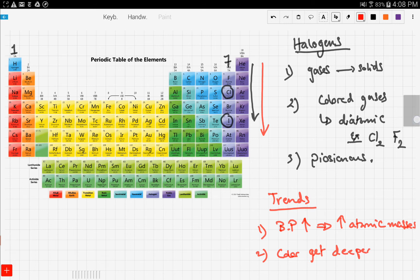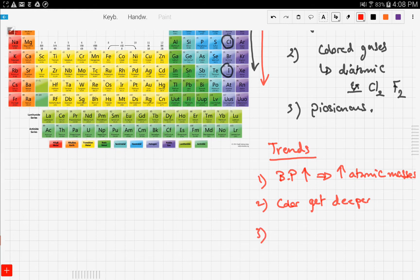Now also one thing to mention is that as you go down the group, density increases. And you can relate to that simply by the formula: density equals mass over volume. And if the mass increases, the density also increases.